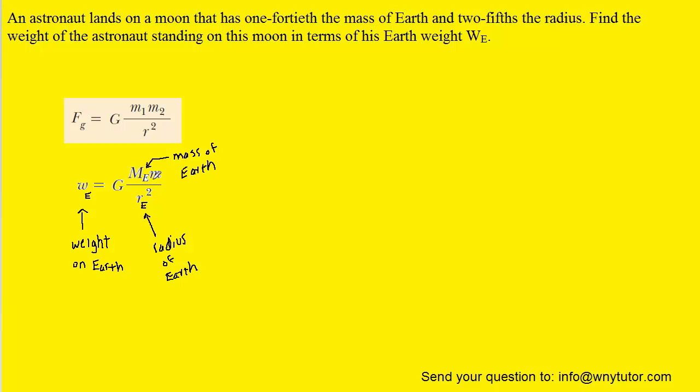The little m represents the mass of whatever object you're trying to calculate the weight for. In this question, we're trying to calculate the weight for an astronaut. The only problem is that the astronaut is not located on Earth, so we can't use this equation. We have to adjust it because he's landing on a moon.